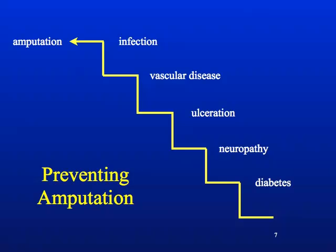We're skipping over vascular disease because, as stated before, it most often just determines the level of amputation and is not directly alone a risk factor for diabetic foot amputations. Now, infection — if you can prevent infection through good wound healing principles, frequently debriding, using specialized advanced wound dressings, perhaps something with silver in it, you can prevent this emergent situation which may require an amputation.